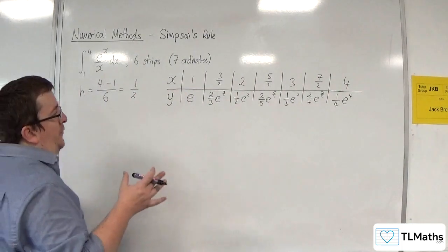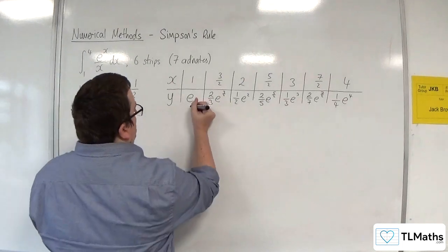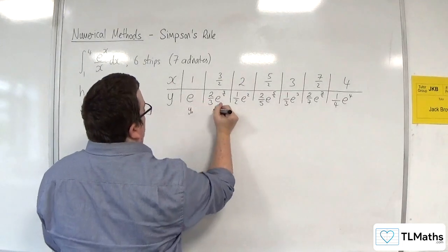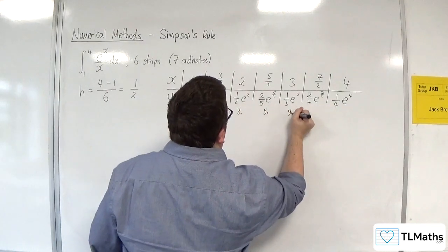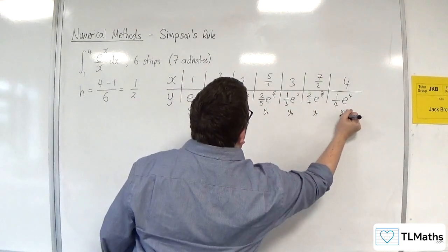Now for ease of substituting into the formula, I'm just going to write underneath. This is y0, y1, y2, y3, y4, y5, and y6.